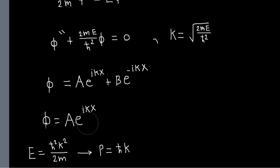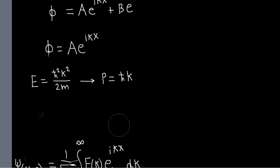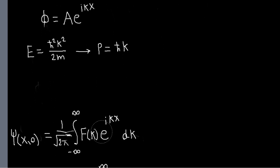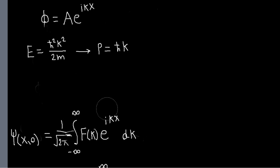When we're building our wave function out of these states, we have to use an integral. Conceptually it's the same thing we've been doing: we want to build our initial wave function out of these eigenstates, but because there's a continuum of eigenvalues for all k, we have to use an integral to write our linear superposition.